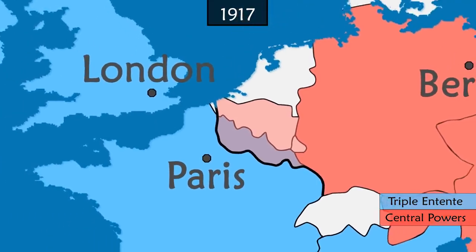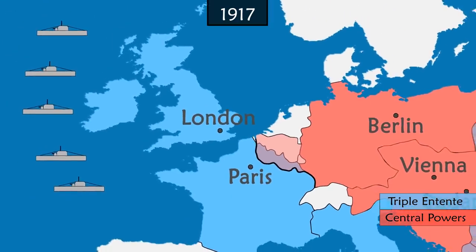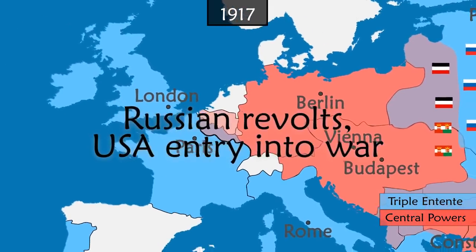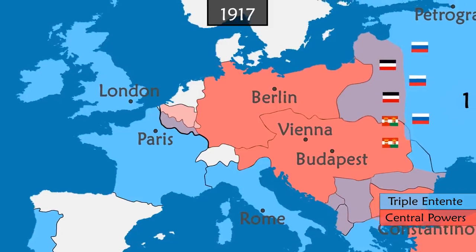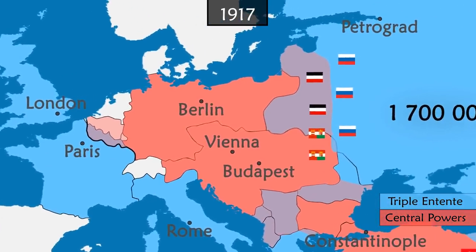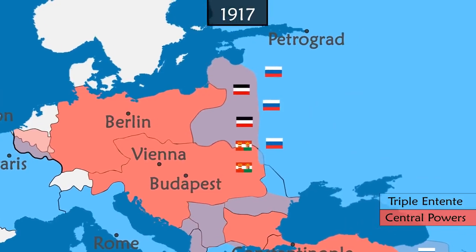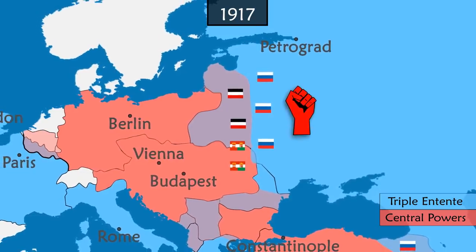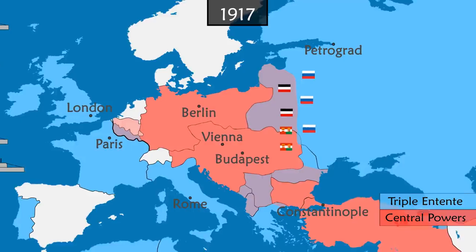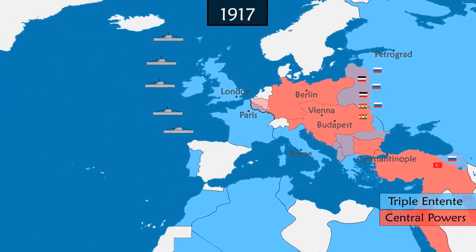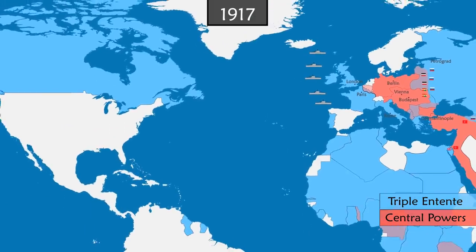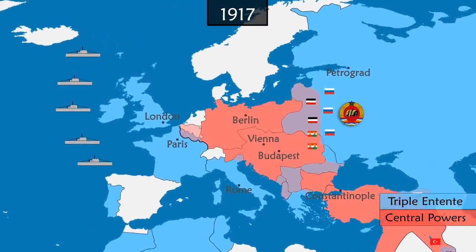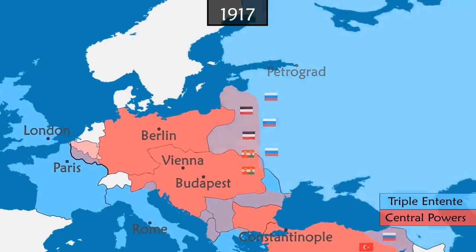Germany is now focused on war on the economic front and sends its submarines to the Atlantic to sink all kinds of ships, even commercial ones heading to the United Kingdom. Exhausted by war, Russia suffers more than 1.7 million military casualties. Morale is at its lowest point on the frontlines and among the public. A revolution brings down the regime of the Tsars. The United States finds itself becoming a victim of the commercial blockade in the Atlantic and decides to go to war alongside the Allies. In Russia, a second revolution allows the Bolsheviks to come to power, who immediately sign a ceasefire with the Central Empires.